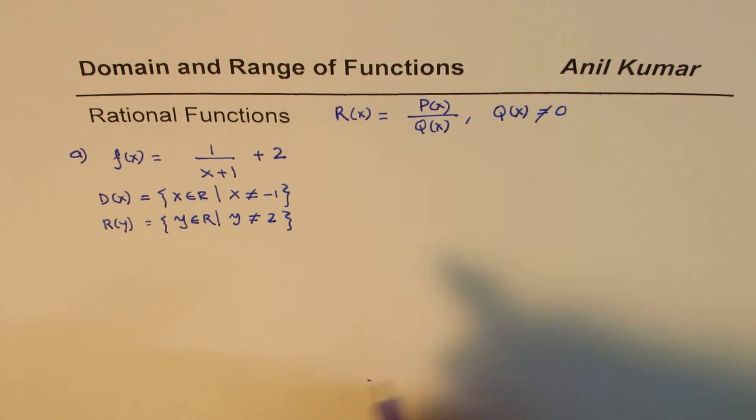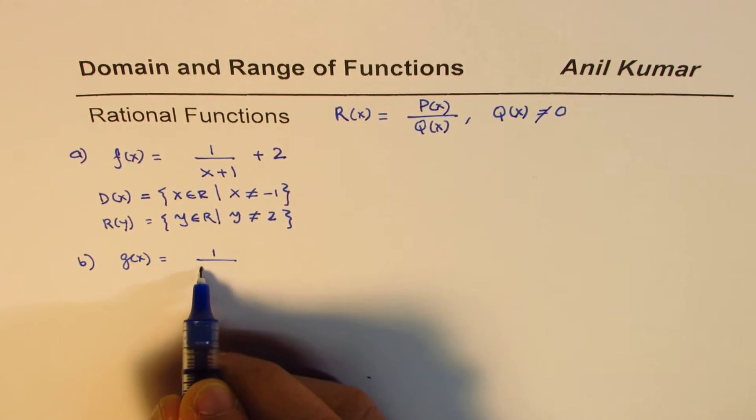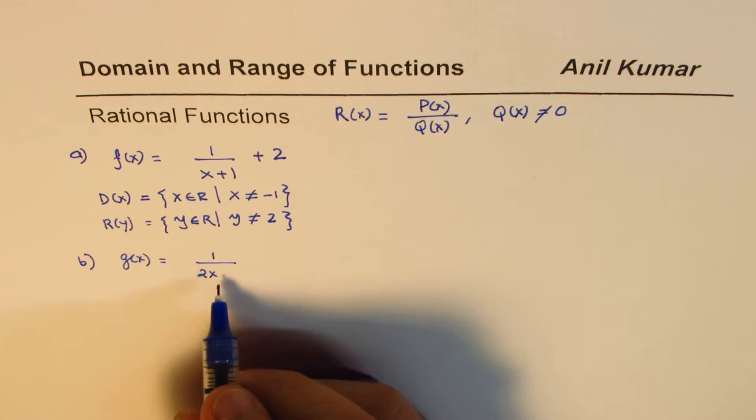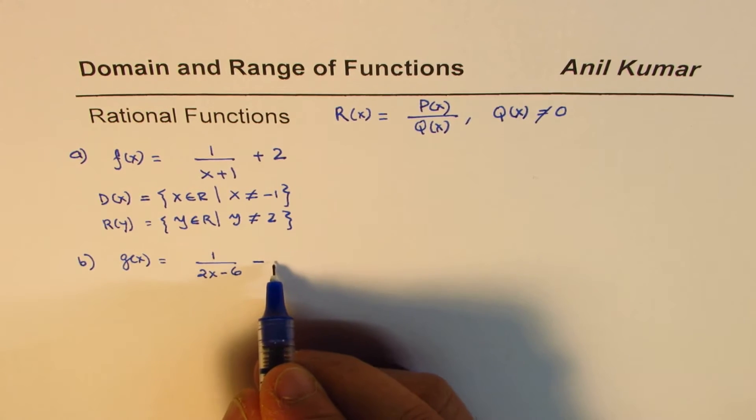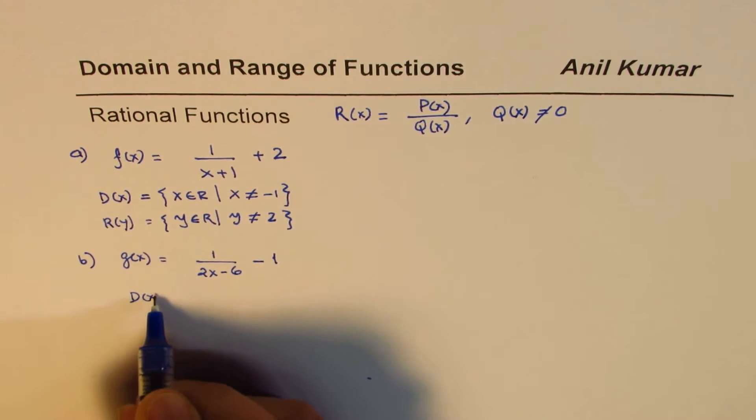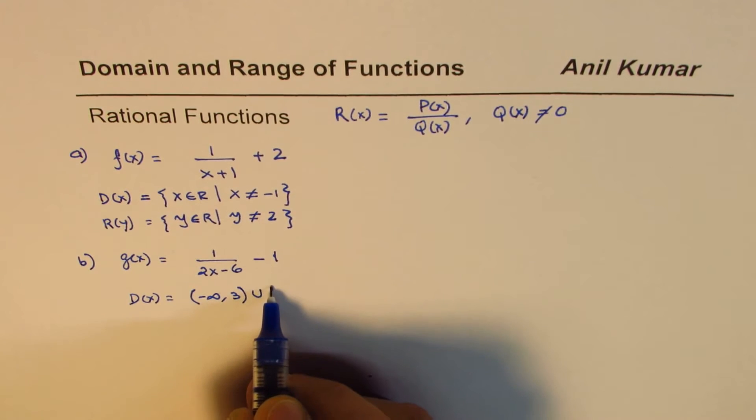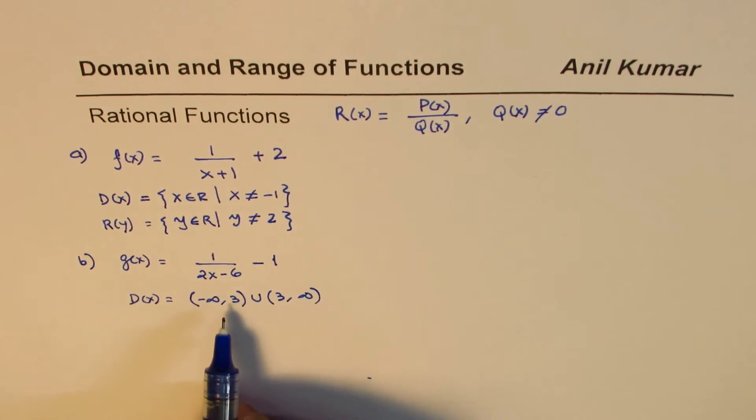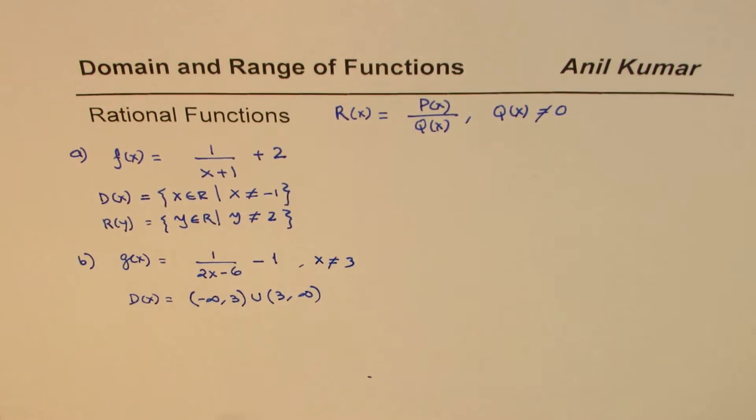Let me take another example here. I'll write g(x) equals, another reciprocal function, let's say this time we take it 1/(2x-6). I don't want to get into fractions, so I'll put this as minus 6, and let me subtract 1. If I write -1 here, again you can write domain and range for this function. You say domain is this denominator cannot be 0, that means x is not equal to 3. You could also write this domain as from -∞ to 3, union from 3 to positive infinity. Everything except x equals 3.